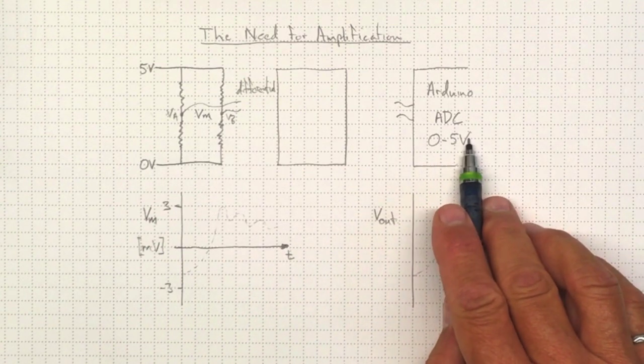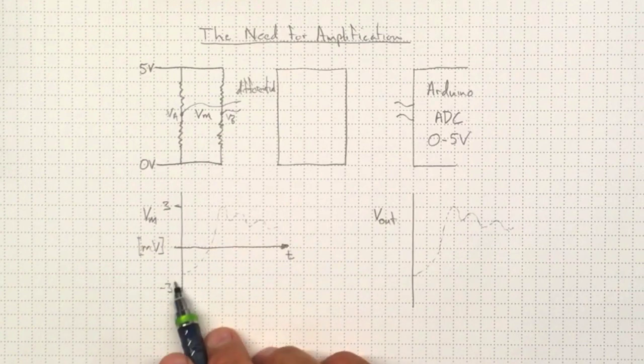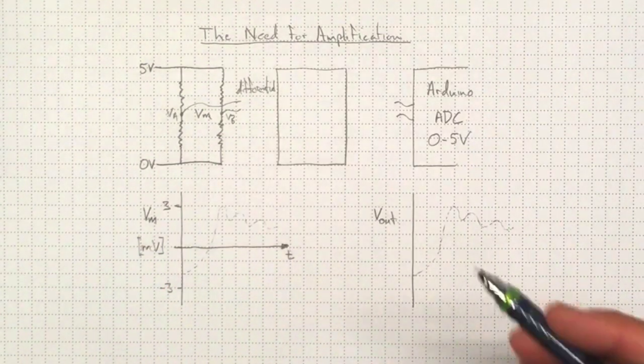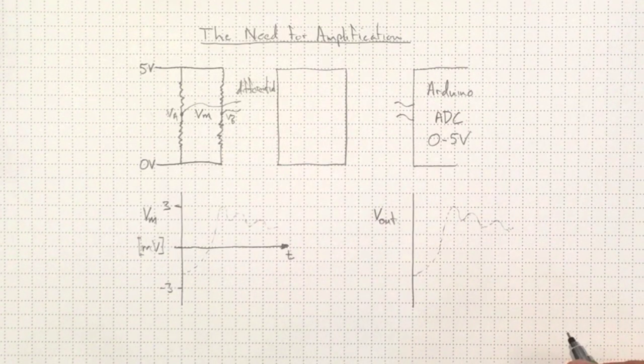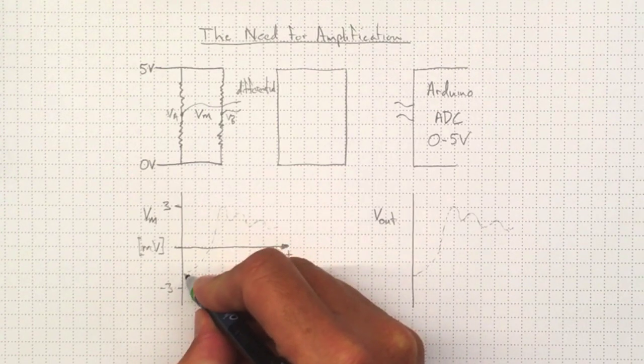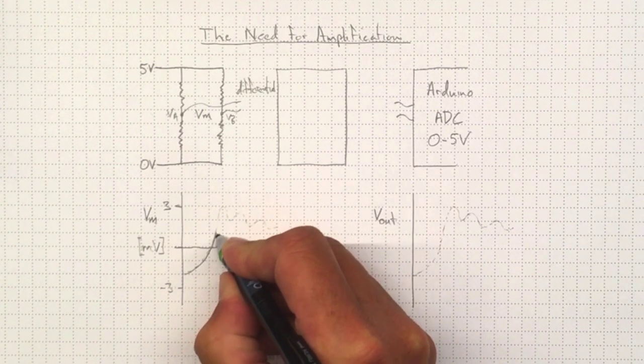And on the 0 to 5 volt range, we'd have a really hard time even seeing these changes that are in the millivolt level, a thousand times smaller. So somehow we need to take this signal that we might read from the bridge that could look something like this...